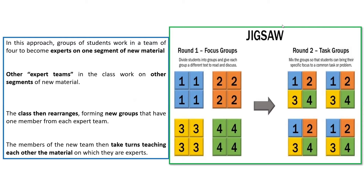The first new group has people from earlier groups one, two, three, and four. Within each new group, the person from group one will teach the rest of the group what he or she mastered. The person who joined from group two will teach the others what he or she mastered in their first group. Similarly, members from groups three and four will also teach the others what they learned in their earlier groups.